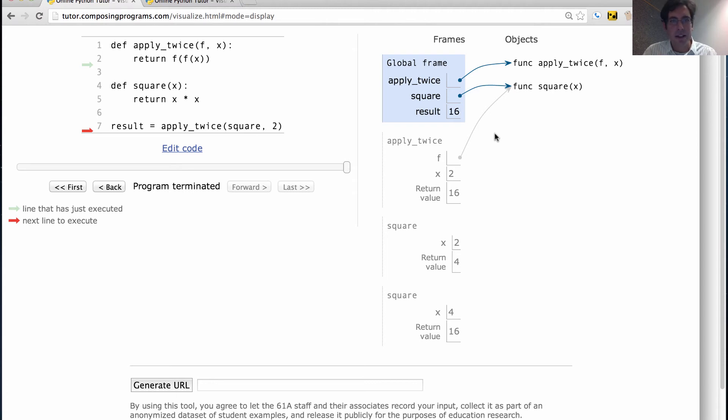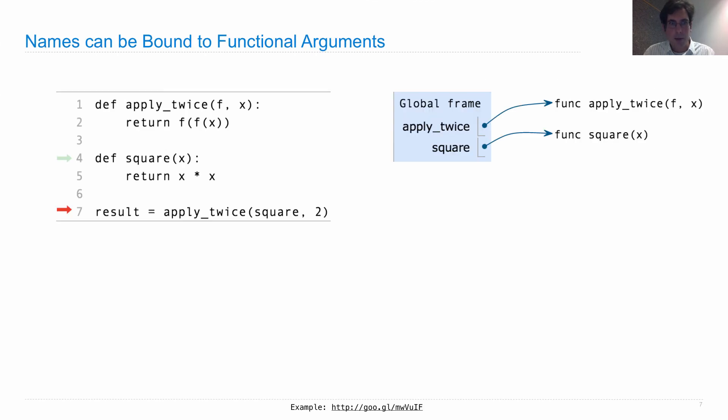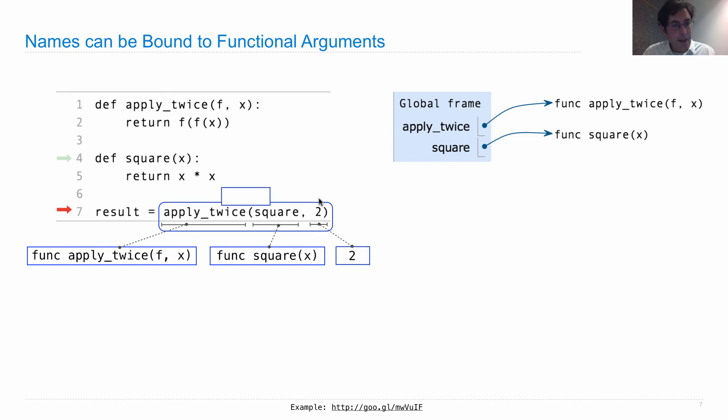There was a critical moment in that progression. Let's look at it. So here we were. We had defined apply_twice and we had defined square. And then we called apply_twice on square and 2. So we want to evaluate this call expression. The operator evaluates to a function. The first operand evaluates to a function. And the second operand evaluates to 2. Then we call this function, which is the value of the operator, on the two operands, one happens to be a function. This is the function we're actually applying. It's called apply_twice.